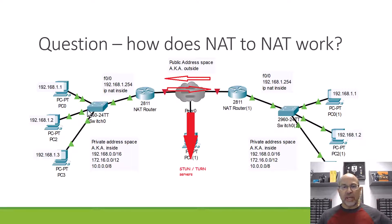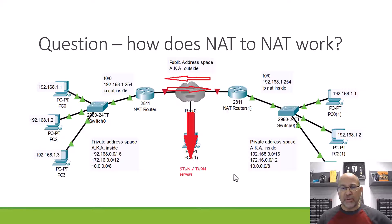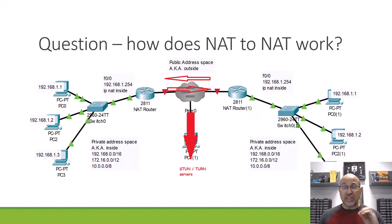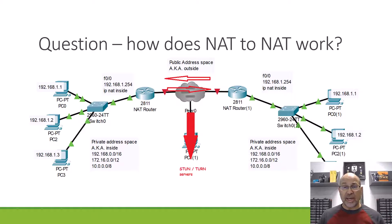So if these are private and these are private, how do folks that are gaming or connecting to each other with some other device connect to each other? The answer is that long before we can establish this conversation, where you're going to somebody else's NAT box or through somebody else's NAT box, you have to have a conversation with some kind of provider. And that is today very often handled by STUN and TURN servers. That's our basic problem: how does NAT-to-NAT work?